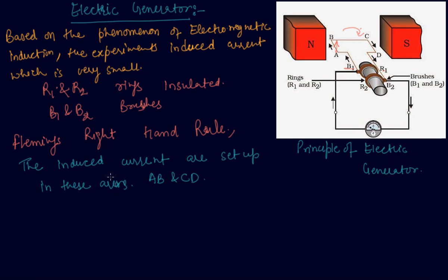If there are a large number of turns in the coil, the current generated in each turn adds up to give a large current through the coil. This means that the current in the external circuit flows from brush B2 to brush B1.